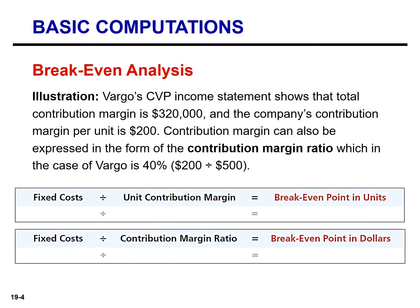Before we introduce additional issues of CVP analysis, let's review some of the basic concepts you learned in the previous chapter. Here are three key topics: break-even analysis, target net income, and margin of safety. Vargo's unit contribution margin is $200 and its contribution margin ratio is 40%. If we divide these two amounts into fixed cost, we'll get the break-even point in units as well as in dollars.